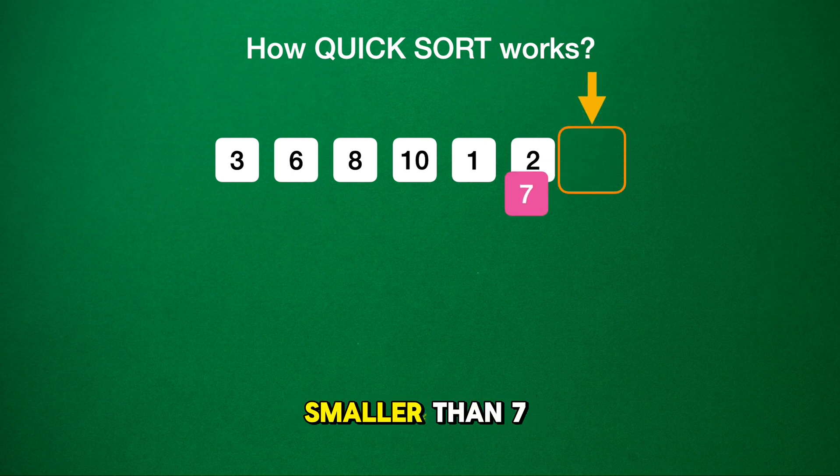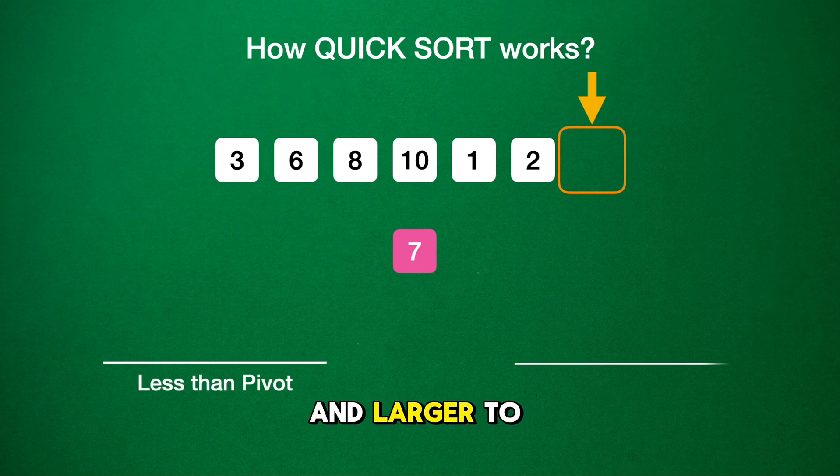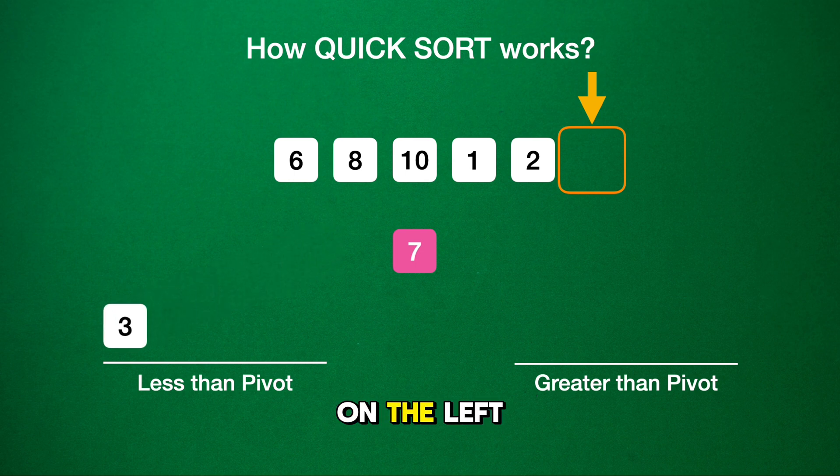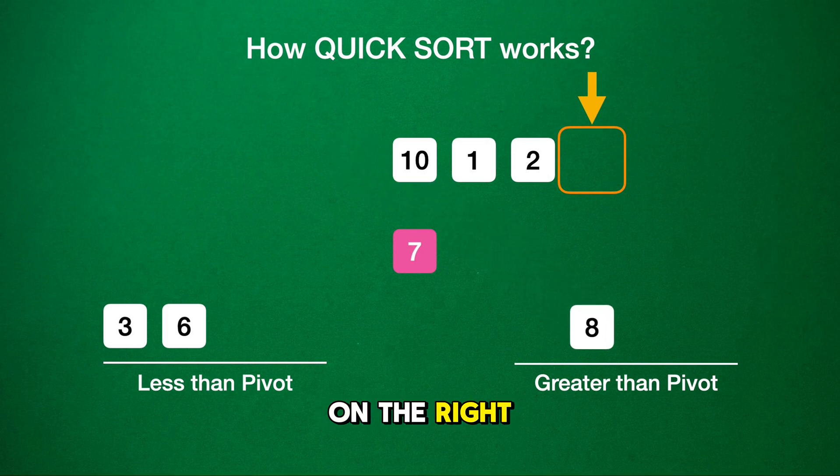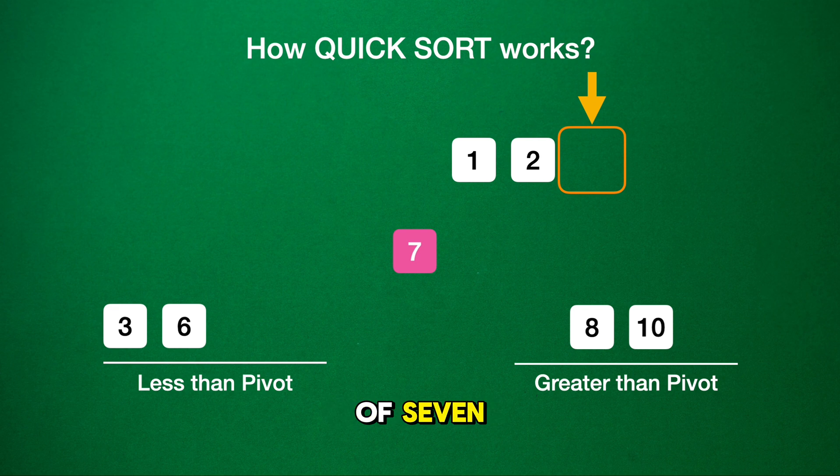Our goal is to move numbers smaller than 7 to one side and larger to the other side. We start from the first item. As 3 is less than 7, so it goes on the left. 6 is also less than 7, joining 3 on the left. 8 is more than 7, so it goes on the right. 10 follows, heading to the right of 7.